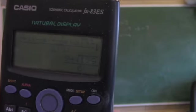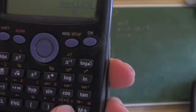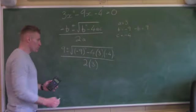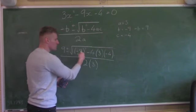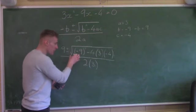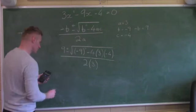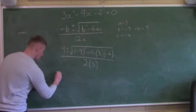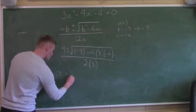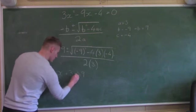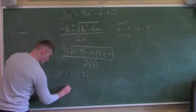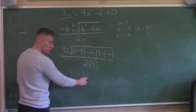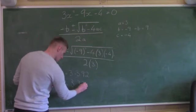You can work it out stage by stage, but to save time in the exam go straight from the formula to the answer. So x equals 3.392 — that's 3 decimal places. Is the third decimal place 5 or more? No, it's less than 5, so it stays as 3.39. Then going back and changing plus to minus, x equals minus 0.392, which rounds to minus 0.39.